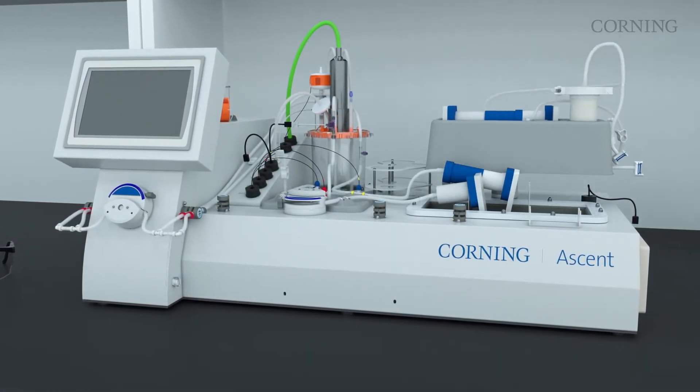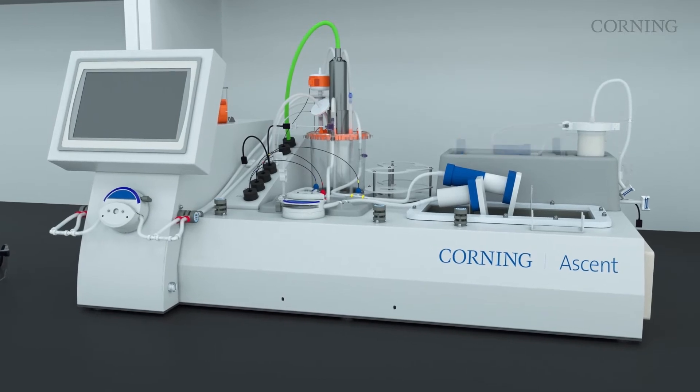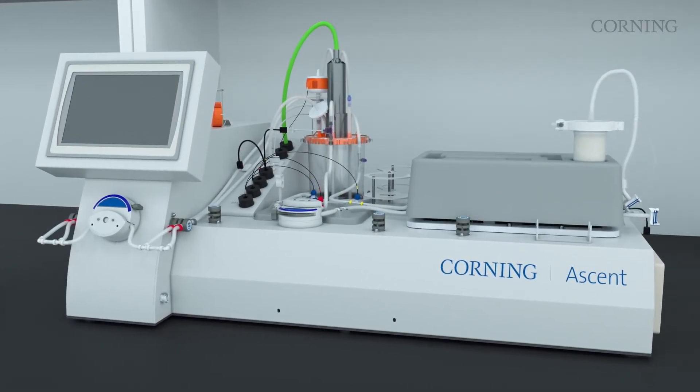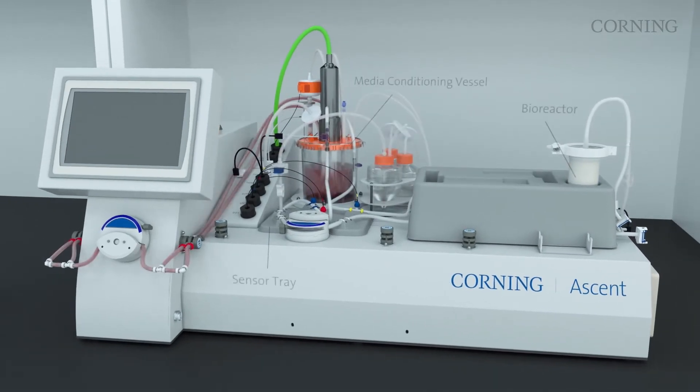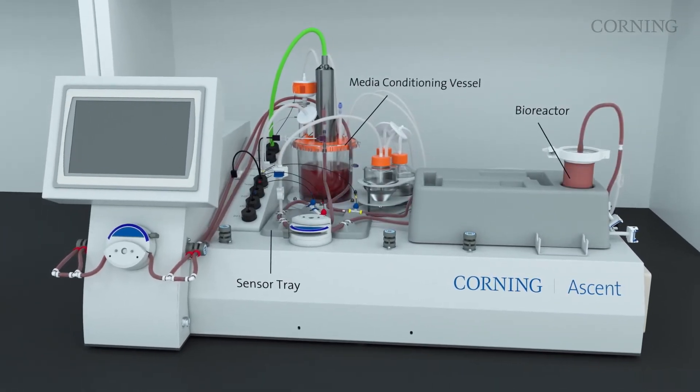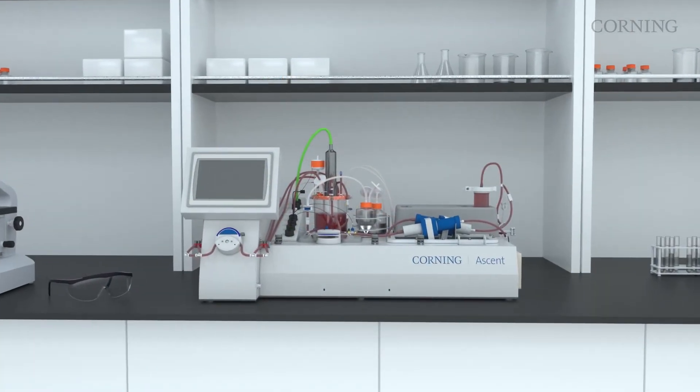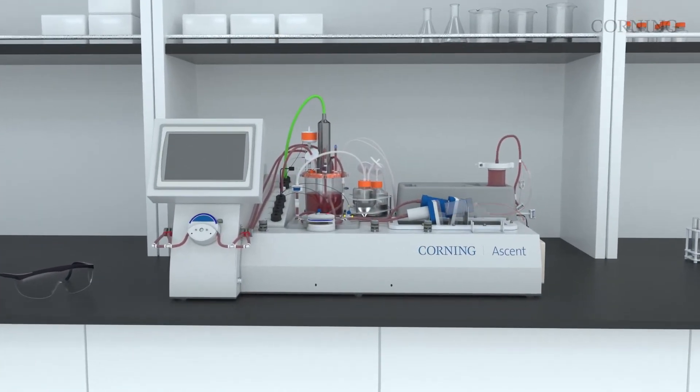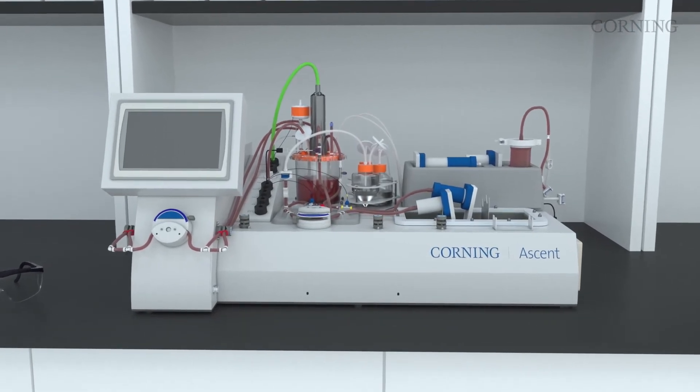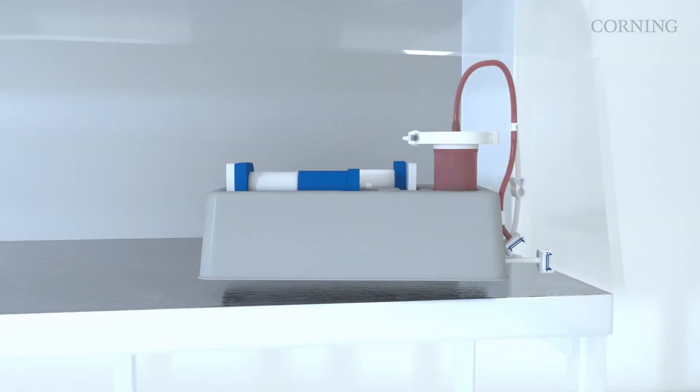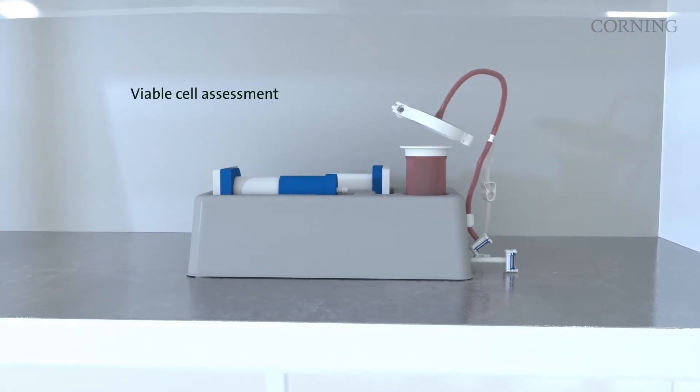Disposable inline sensors monitor key process parameters such as pH, dissolved oxygen and temperature. A sampling port enables additional sampling of media for offline analysis of glucose and other analytes. The Ascend FBR is a closed system that can be run outside of a laminar flow hood. Link's connectors or tube welding enable easy aseptic cell sampling of the bioreactor mesh for cell counting.